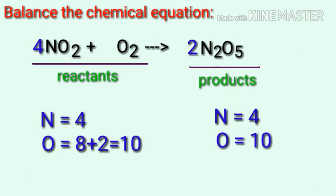The equation is now balanced. There are four nitrogen atoms and 10 oxygen atoms on both sides.